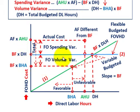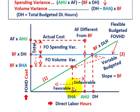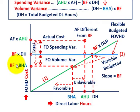Now let's look at how we get our variances. Starting with our budgeted hours allocated or allowed, we move that up to our green variable line and then across to our y-axis. That gives us the budgeted fixed cost per hour times the budgeted hours allowed — that's our first point.